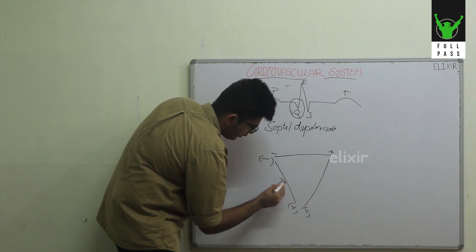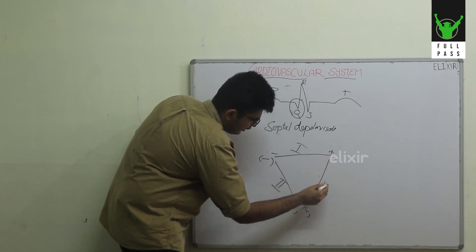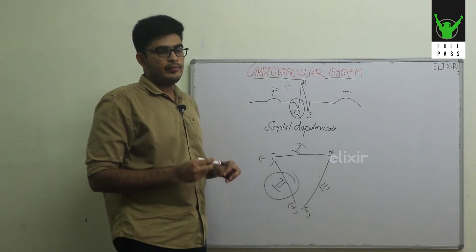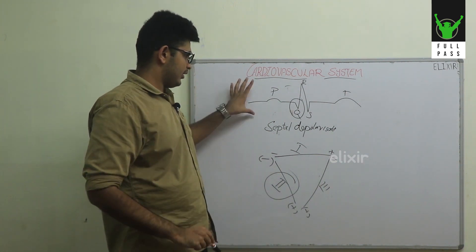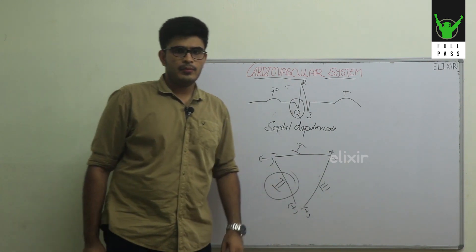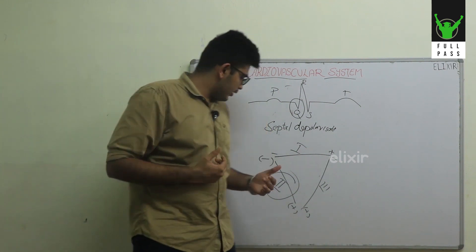This is your lead 2, this is lead 1, and lead 3. These two are not important. This is the major, most commonly read ECG. This represents lead 2.